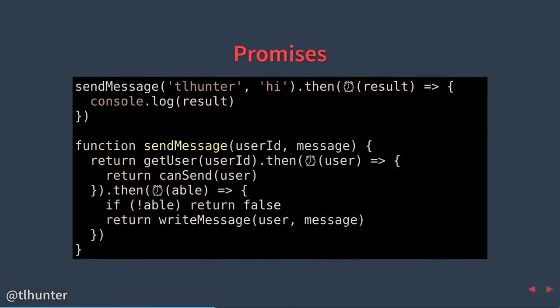We get the 'able' value. From within this promise we can return a false value — false isn't a promise, it's just a Boolean. The entire promise chain resolves into that false value, meaning the dot-then function up there finally fires and the result variable becomes false. However, if we are able to send the message, we return another call to writeMessage, passing user and message. That itself is a promise which resolves into the true/false value of whether the message was successfully sent.